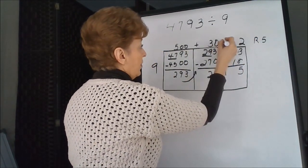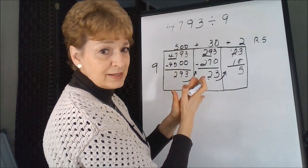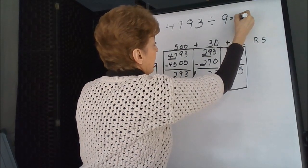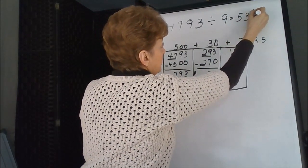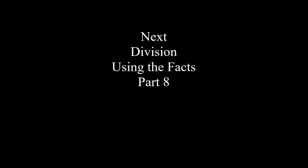These are added together, so we're going to take our number and reconstruct it. 532 remainder 5.